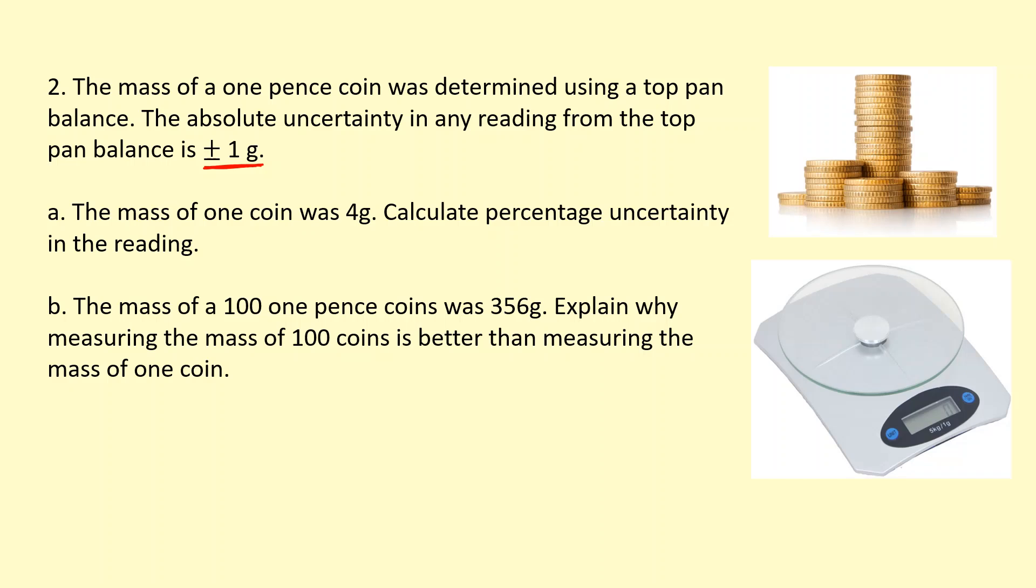When we measure the mass of one coin, we get 4 grams. So the percentage uncertainty there is going to be 1 divided by 4 times 100, which is 25%. When we measure the mass of 100 coins, we get 356. So that means the mass of one coin is 3.56 grams. I just divided by 100 there.